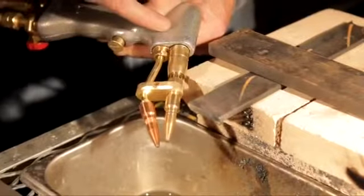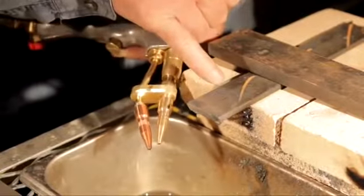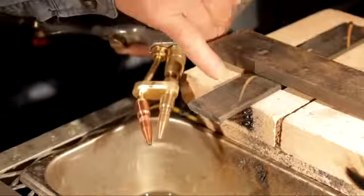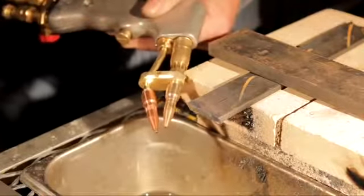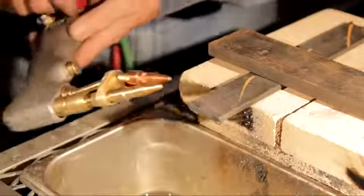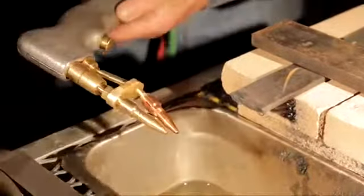Now you're going to have to bump the oxygen up to about 10 pounds. Remember when you cut thick metal, you have to preheat it more, and you're going to have to bump the oxygen only. Acetylene's always just four pounds. Just a little acetylene, a little bit of oxygen.